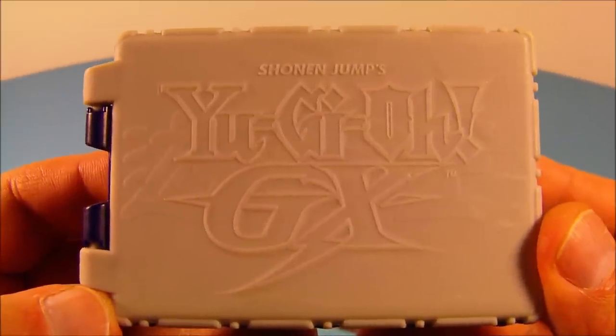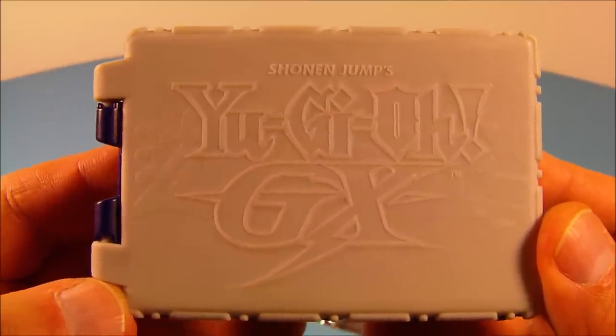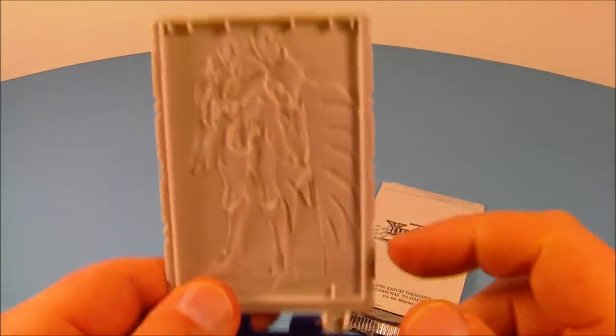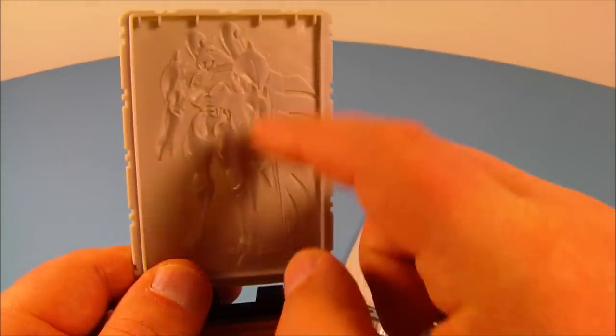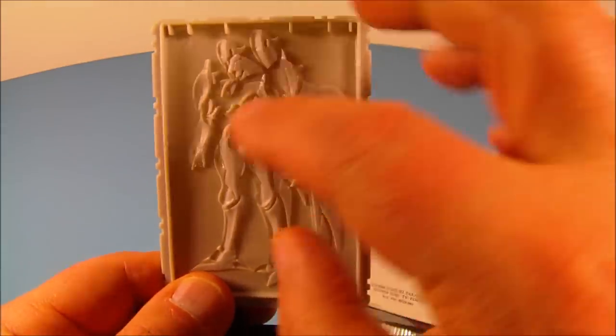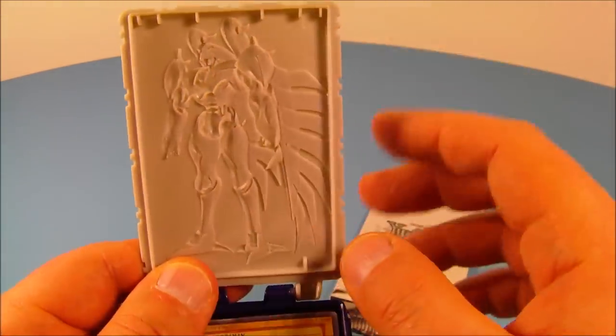And last up at number eight is the Elemental Hero Shining Flare Wingman Toy. This is really neat. Basically it's a box. You can use it to store your cards. What you do is you flip this open. You hold this part. This top part here up to the light. And what it does is it enhances this outline of this figure here and kind of makes it stand out and give it a more 3D look. Very cool.